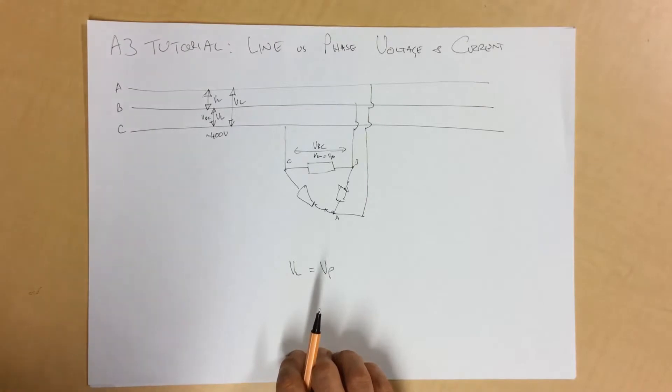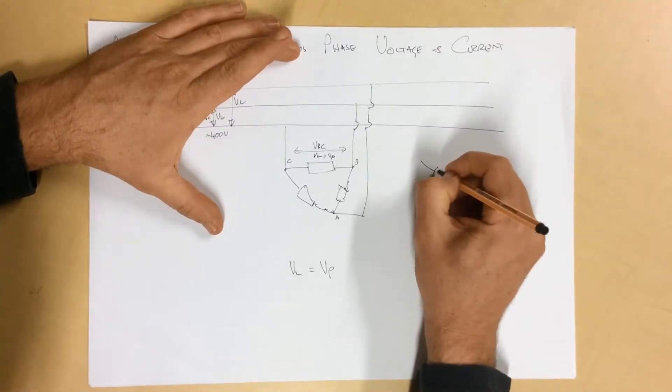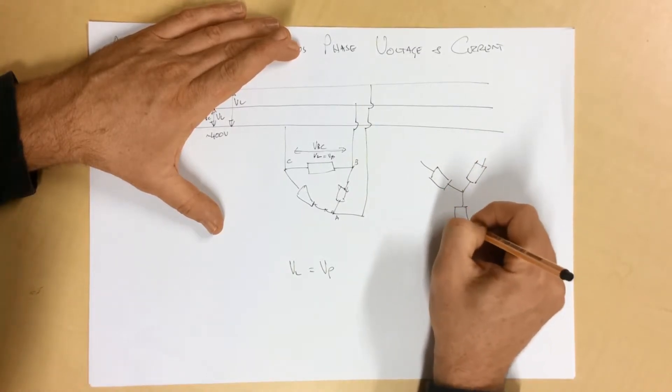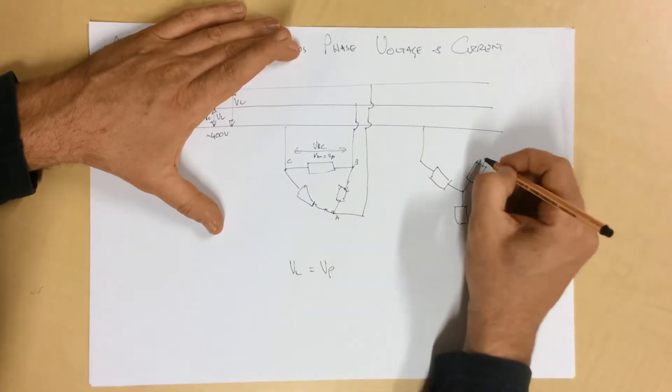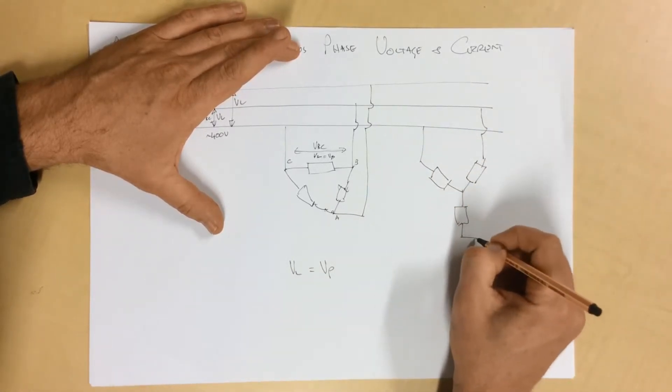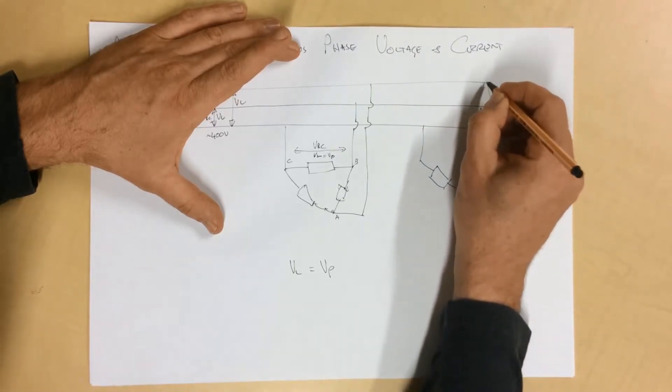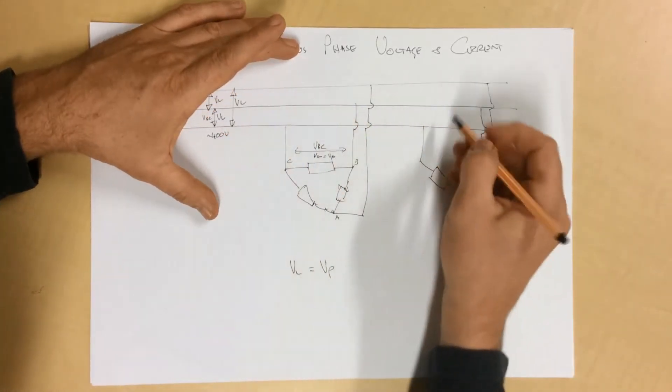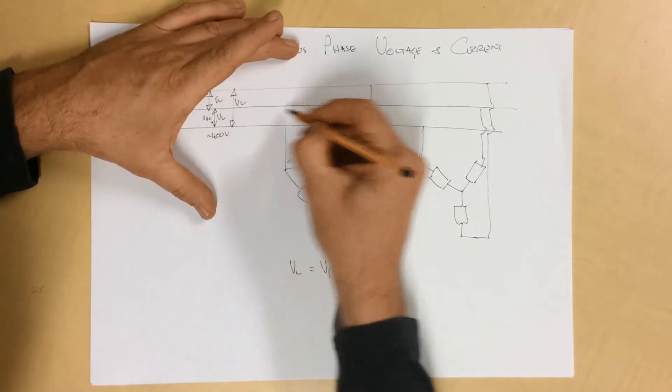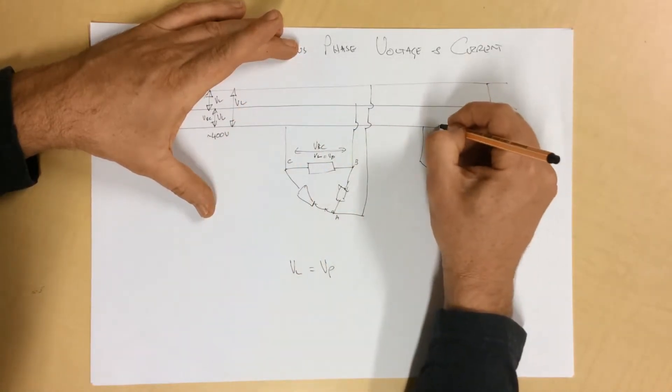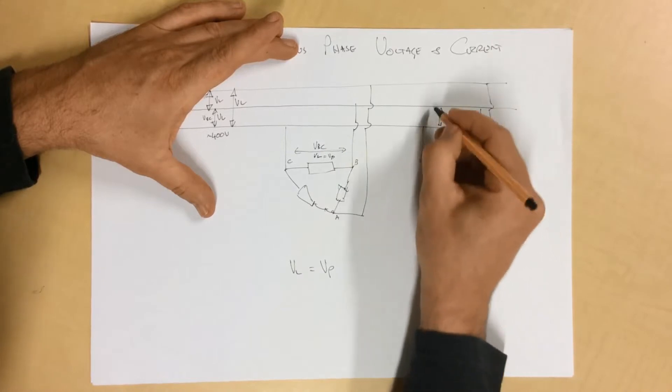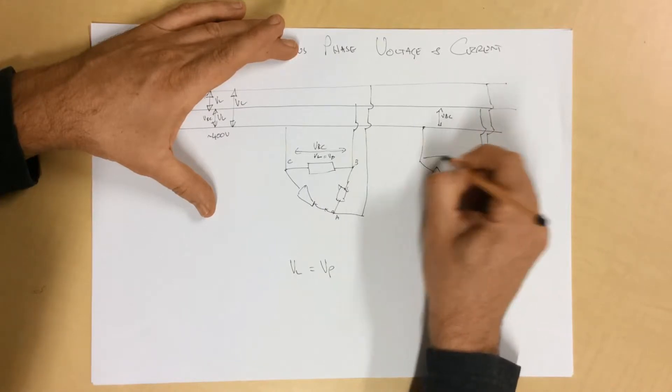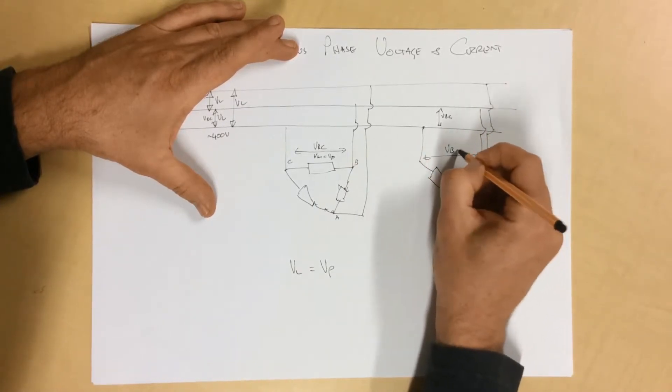Now, if we just pop over and have a look at a star system, for example, we can draw a star system over here. And we can connect this one up like this. We can see that this, between here, this VBC point that we've got here is this voltage. We can see it here, we can see it here, and it is also here.